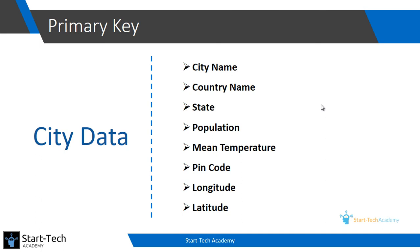Now let's go one by one over each of the given fields. Our first field is city name, but there can be multiple cities that have the same city name. In fact, we have a city named Rome on all continents except Antarctica. So we cannot assign city name as a primary key. Next is country — multiple cities in each country share the same country name, so we cannot assign country name as a primary key. Similarly, multiple cities will have the same state, so we have to rule out state as well. Population and average temperature can also be equal for two cities, so we cannot assign these two fields as our primary key.